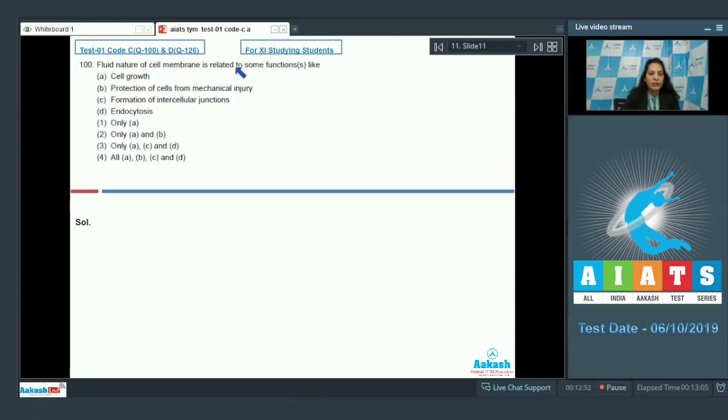Question number 100: Fluid nature of cell membrane is related to some functions like cell growth, of course, formation of intercellular junctions, endocytosis also. Protection of cells from mechanical injury - it's a function of cell wall, not of cell membrane. So A, C and D. The correct option for the given question is option number three. Let's move to the next question, question number 101.